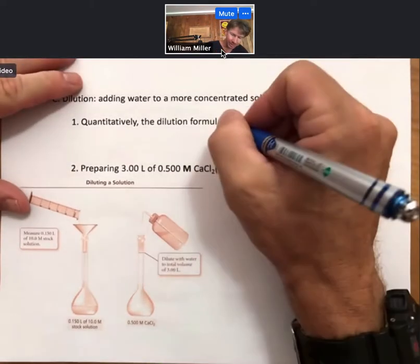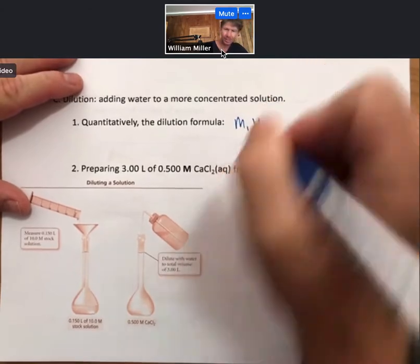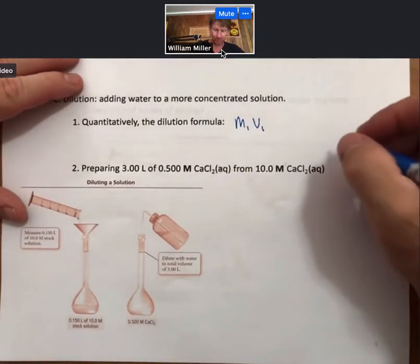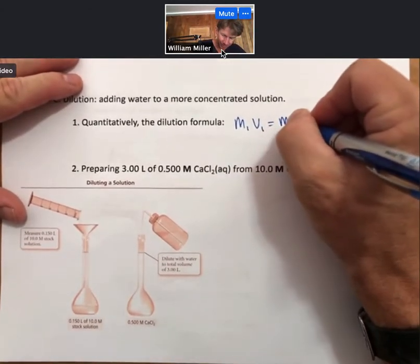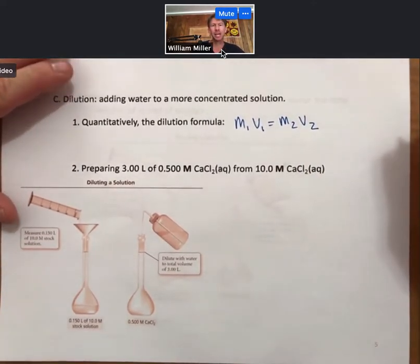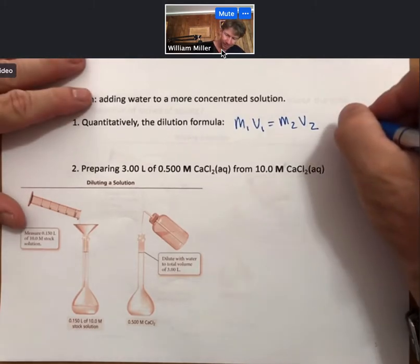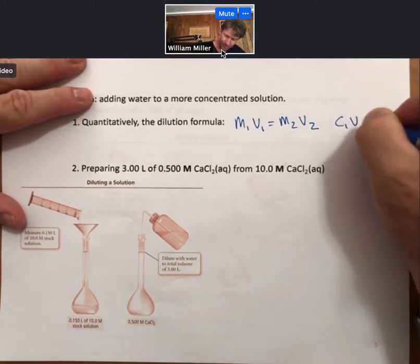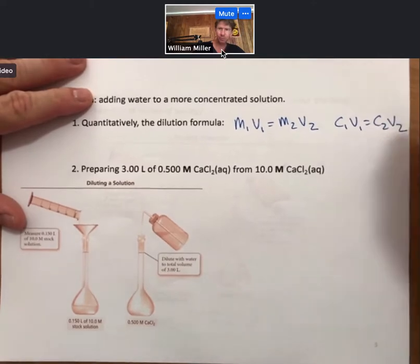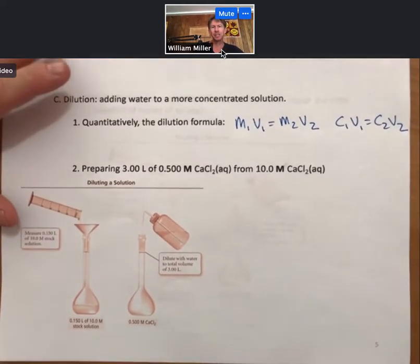Quantitatively, the dilution formula is M1V1 equals M2V2, where M, capital M stands for molarity, and capital V stands for volume. There's another version, which is more general, which says C1V1 equals C2V2. There are other concentration units, although principally we're going to be sticking with molarity.